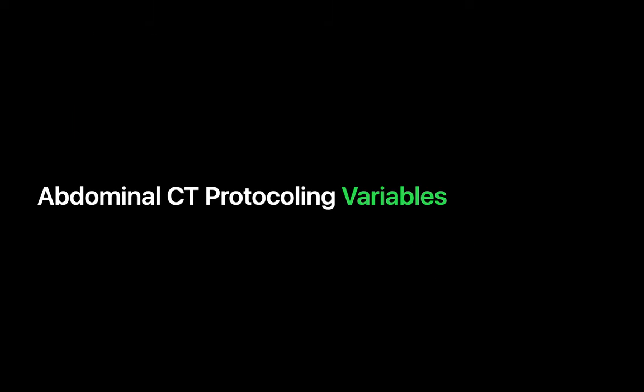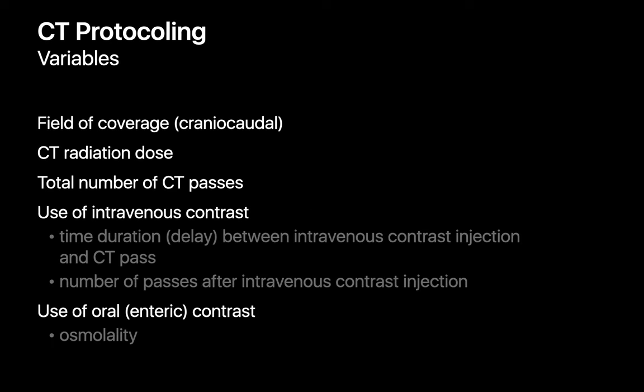A big reason why abdominal CT protocols are more complex than chest CT protocols is because there are many more potential variables involved, including the field of coverage of a scan, the amount of radiation dose to use, and the number of scans that will be required. We need to decide whether we'll use intravenous contrast or not, and if we do, how long to wait between the IV contrast injection and CT scan, and how many scans to do after the contrast injection. We also need to decide whether we need oral contrast, and if so, what type.